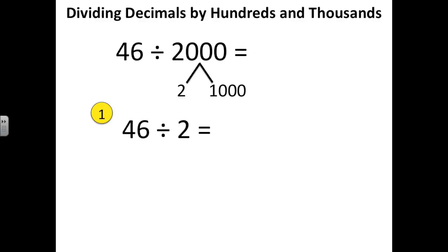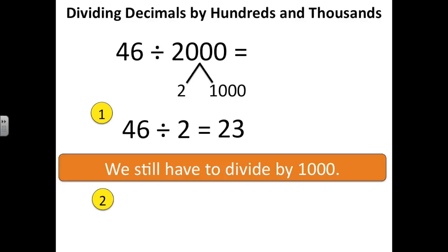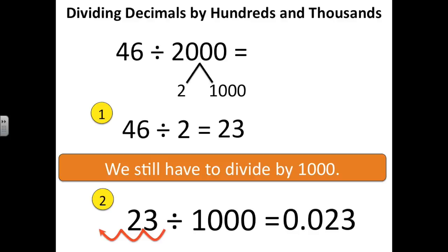My first step is going to be to take 46 and divide it by 2. I can solve that mentally. 46 divided by 2 is 23. If you want to write it down on paper, though, that is fine. Then I have a second step. I need to make sure that I divide it by 1,000. I'm not done yet. I just solved 46 divided by 2, not 46 divided by 2,000. So now I'm going to take that answer of 23 and divide that by 1,000. I'll move my decimal point three places to the left to make it 1,000 times smaller. And my answer is going to be 23 thousandths.